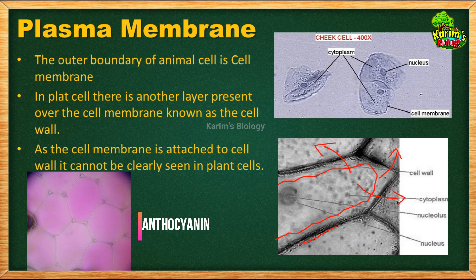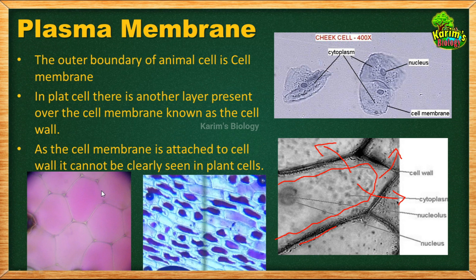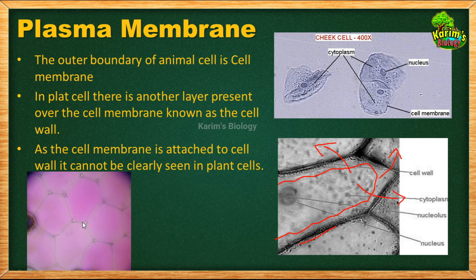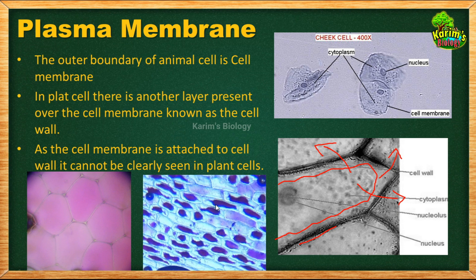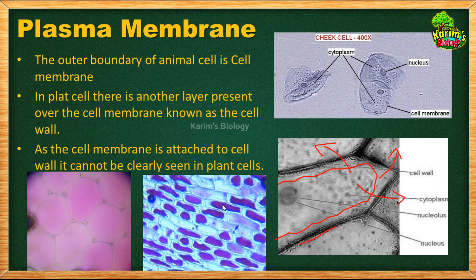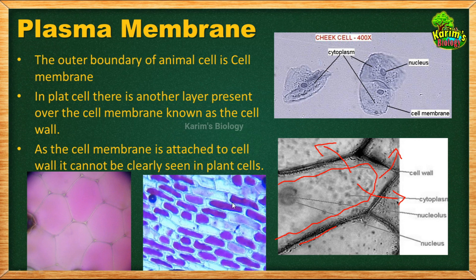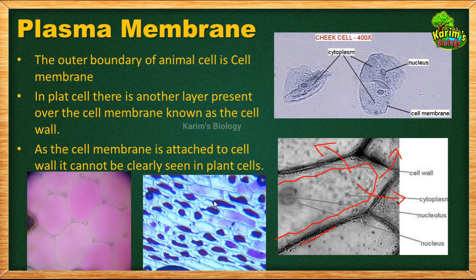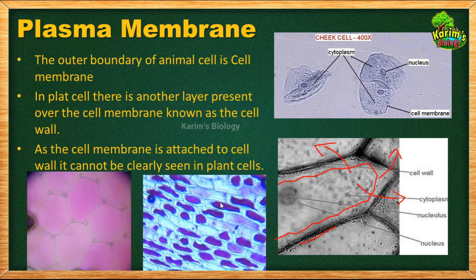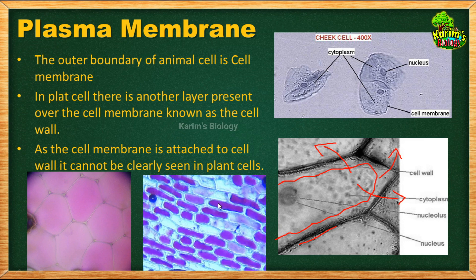We can use this property of Rhoeo discolor to observe the cytoplasm and cell membrane. The problem is that the cell membrane is attached to the cell wall, so you cannot see it. We have to separate the membrane from the cell wall by plasmolysis. Previously the cell's cytoplasm had more water so the cell membrane was attached to the cell wall, but when water from the cytoplasm is lost the cytoplasm shrinks, and the cell membrane gets separated from the cell wall.